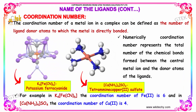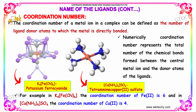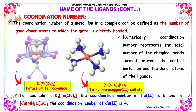Coordination number: the coordination number of a metal ion in a complex can be defined as the number of ligand donor atoms to which the metal is directly bonded. Numerically, it represents the total number of chemical bonds formed between the central metal ion and the donor atoms. The coordination numbers here are 1, 2, 3, 4. For example, in K₄[Fe(CN)₆], the coordination number of the iron ion is 6.